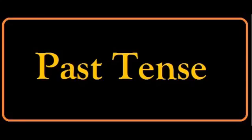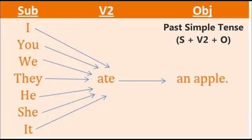The second tense is past tense. It also has the same four sub-tenses. The first one is past simple tense. The structure is subject plus V2 plus object. Here the verb is in second form, V2. In the previous tense we used V1 'eat'; here we use V2 'ate'. So: I ate an apple, you ate an apple, we ate an apple, they ate an apple, he ate an apple, she ate an apple, it ate an apple. Only V2 is used for all subjects.